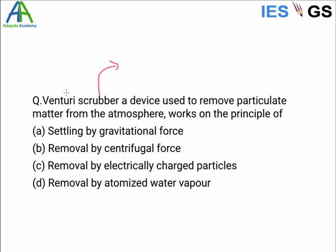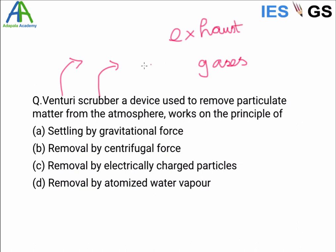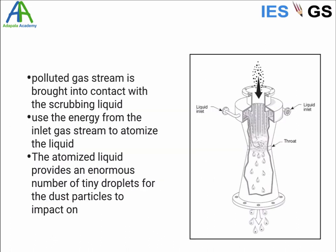What is a scrubber? A scrubber is a device used to remove pollutants — particulate matter or gases — from exhaust. It can work in different ways: chemical absorption, electrostatic precipitation, and so on. Different methods are available.